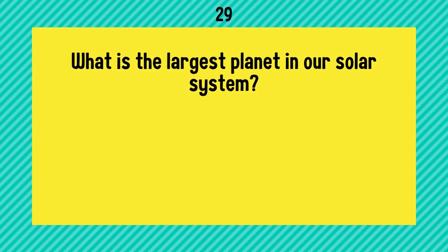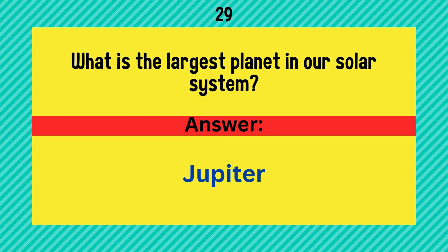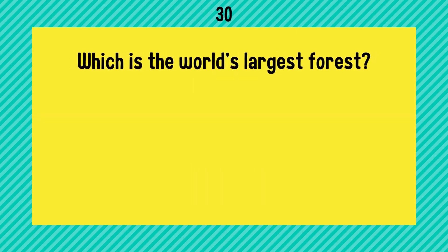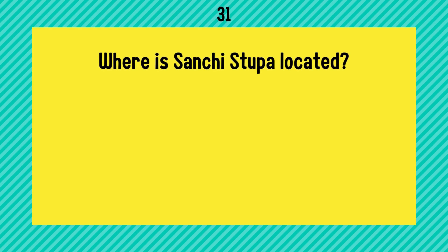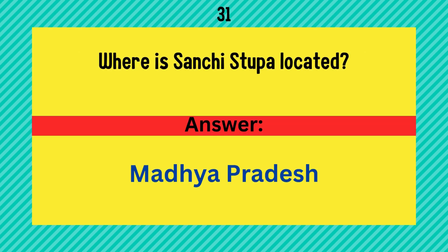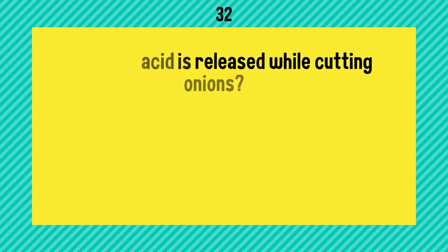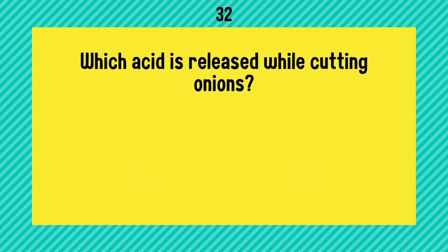What is the largest planet in our solar system? Answer is Jupiter. Which is the world's largest forest? Answer is the Amazon rainforest. Where is Sanchi Stupa located? Answer is Madhya Pradesh.